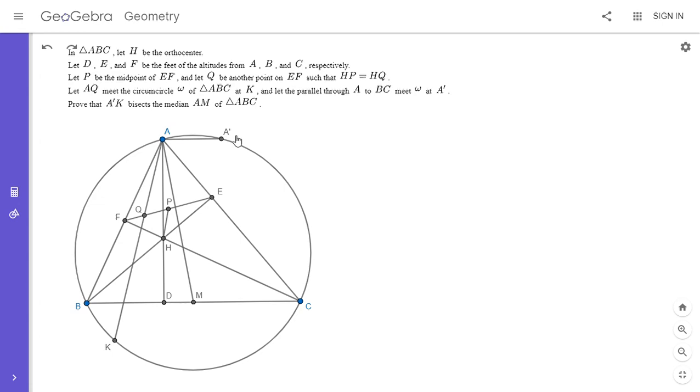So I haven't drawn the segment A'K, but if we did draw it, then the problem says to show that it bisects AM, where M is the midpoint of BC. All right, so how do we get started here?